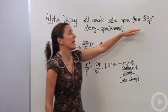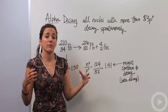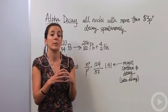All nuclei with more than 83 protons in the nucleus decay spontaneously. They're going to automatically, without even doing anything, start releasing those protons and neutrons to make it smaller and a much more stable nucleus.